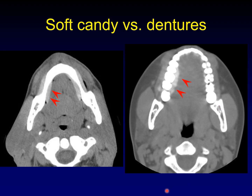One of these is soft candy being chewed up, and the other is dentures. If you saw that these dentures went all the way around on both the lingual and buccal surface of the jaw on both sides, then you could probably identify the dentures. This is candy that is partially eaten and is stuck to the teeth.